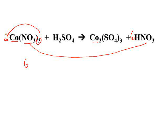We'll next move to our sulfate ion. We've got one sulfate ion on this side of the equation and three sulfate ions on the product side. Putting a three in front of the sulfuric acid will give us three sulfates and three sulfates. The last thing we'll look at is our hydrogens. We have six hydrogens on this side — three times two — and six hydrogens here.